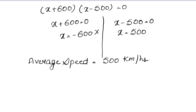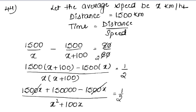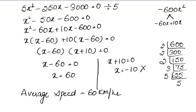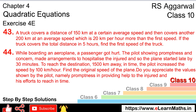The question also asks whether the pilot did the right thing. Yes, of course — the pilot saved the patient's life by arranging hospitalization. We appreciate the values shown by the pilot. Answer: average speed is 500 km per hour.